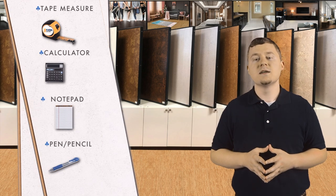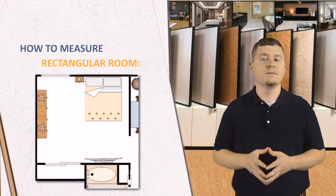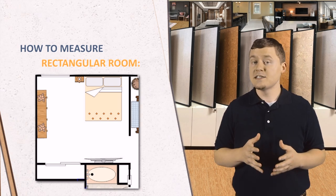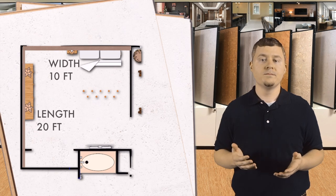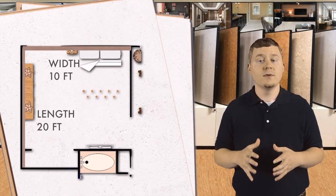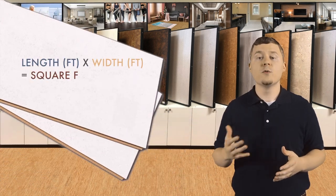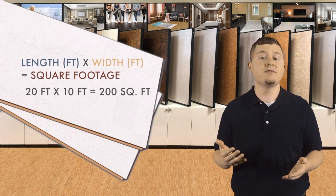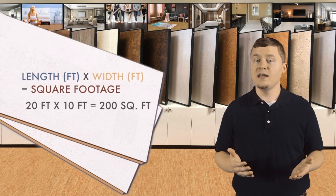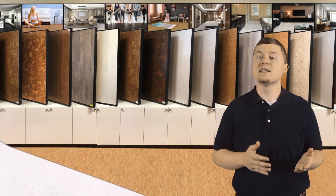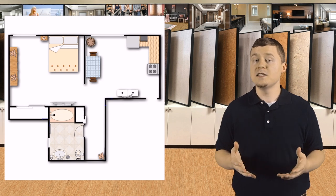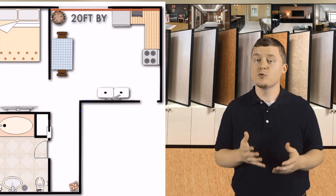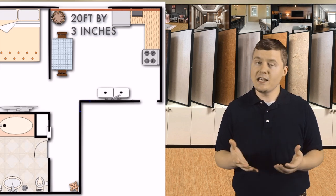Next, follow the steps that apply to your room layout. How to measure and calculate the square footage of a simple rectangular room. Calculating square footage of a rectangular room is quite easy — multiply the length of the room by the width of the room, measured from the inside. For example, if your length is 20 feet and your width is 10 feet, then 20 feet times 10 feet equals 200 square feet. If you have a measurement like 20 feet 3 inches, you can round it up — so 20 feet 6 inches becomes 20 and a half feet for easier estimation.